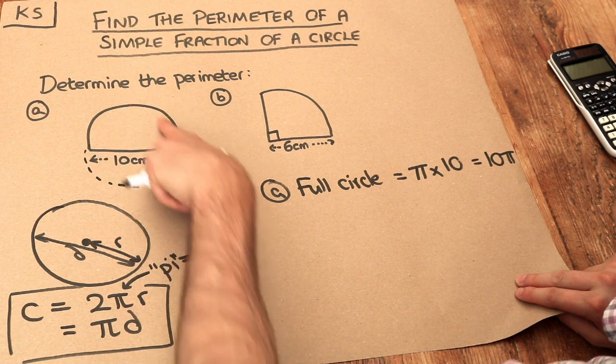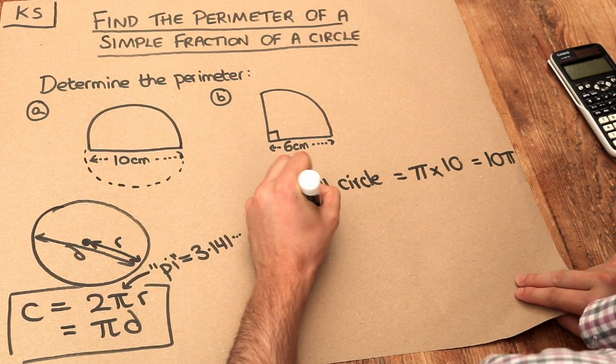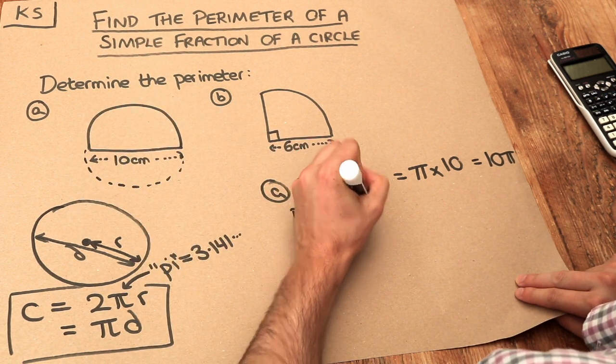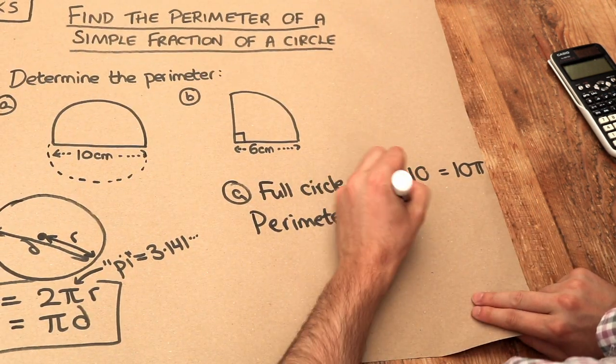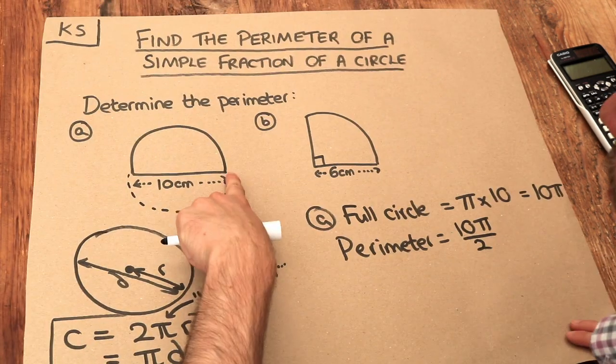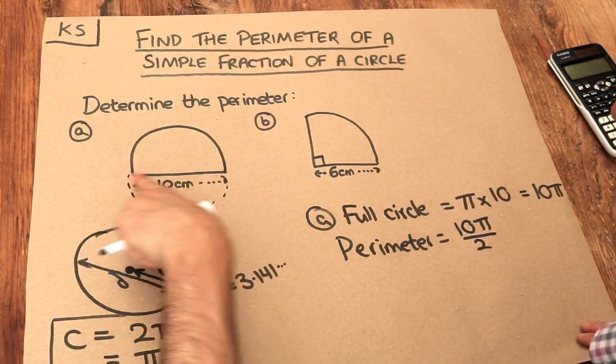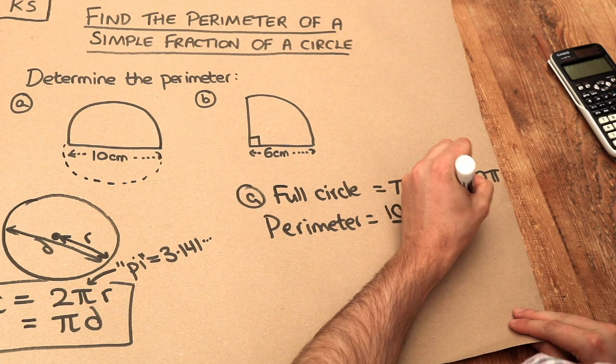But we just want half a circle. So our perimeter is going to be half of 10 pi. So it's 10 pi over 2. But then we've also got this straight length at the bottom of 10. So we're going to add on 10.